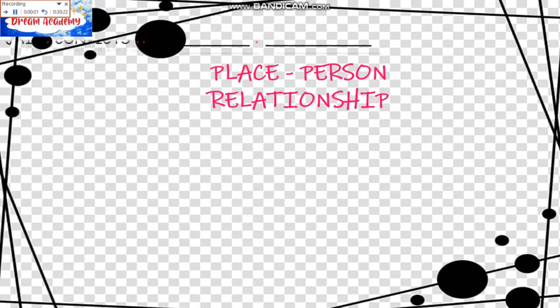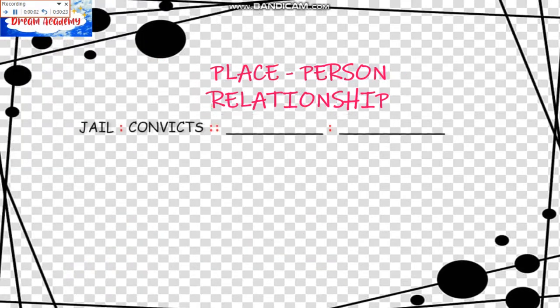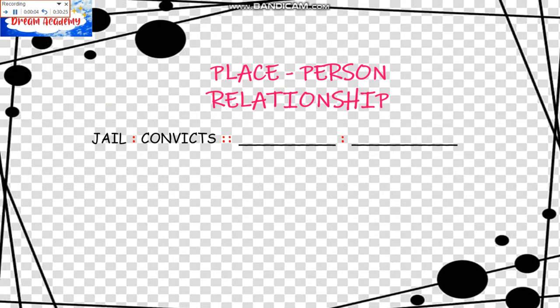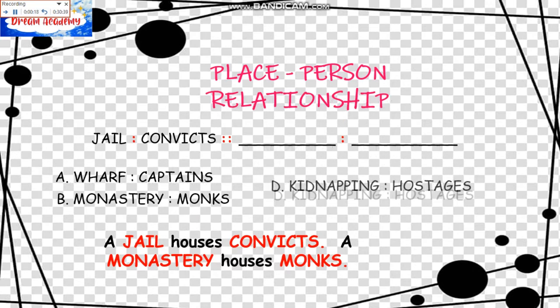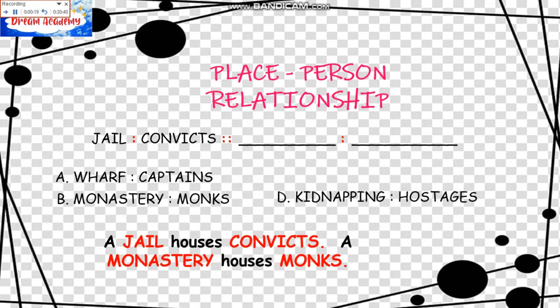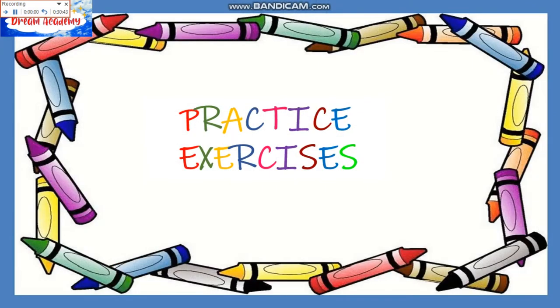Place-Person Relationship. Jail is to Convicts as blank is to blank. A jailhouse houses convicts, and a monastery houses monks. The choices are: A, Wharf is to Captains; B, Monastery is to Monks — which is the answer; C, Kidnapping is to Hostages; D, Barracks is to Officers. The answer is B.